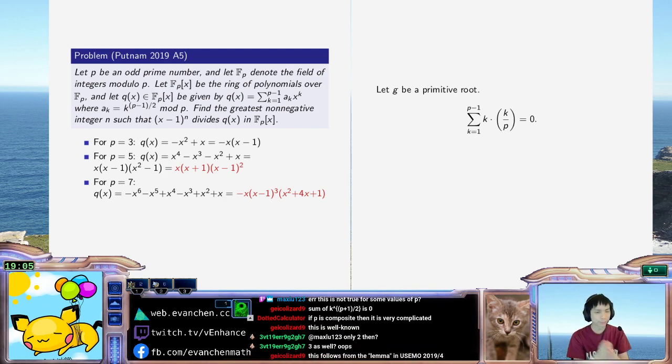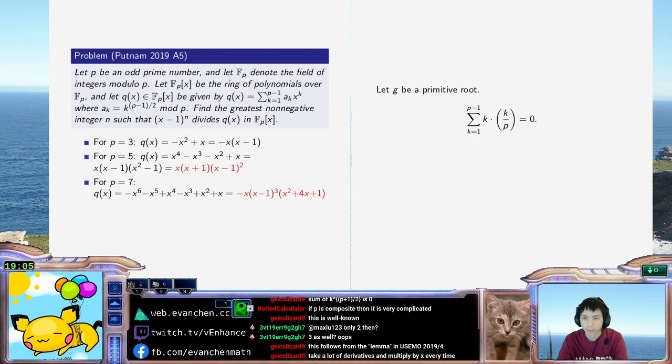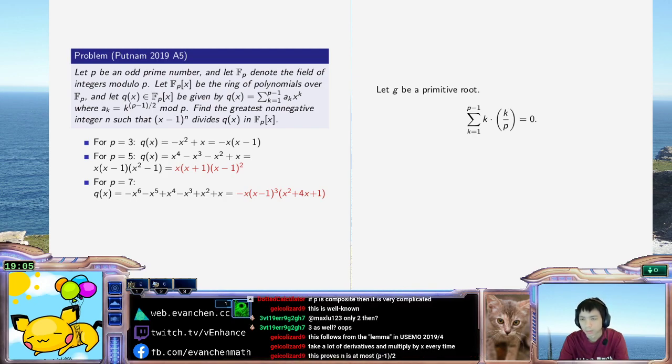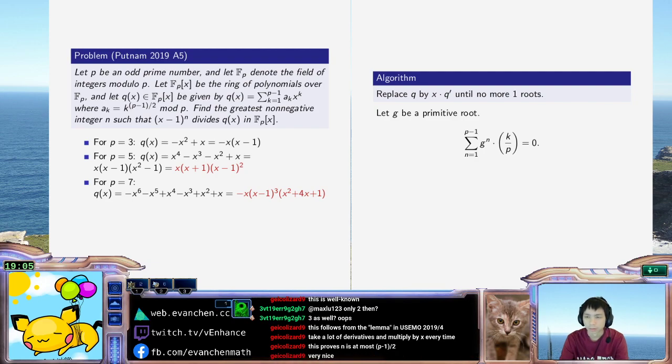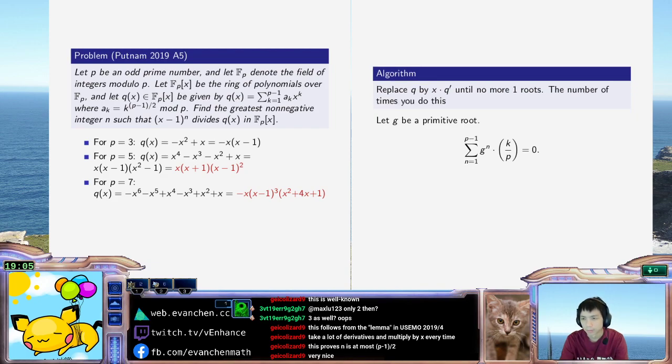If I differentiate and multiply by x, that, like, multiplication by x will preserve the number of roots. So here's the algorithm. We're going to replace q by x times the derivative of q until no more 1 roots. And the number of times you do this, you can do this, is equal to the multiplicity of x equals 1 root.